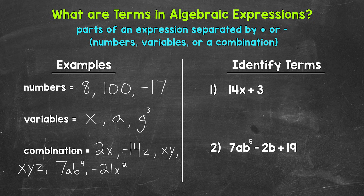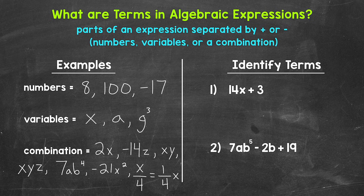My last example is x over 4, so x divided by 4. Keep in mind, this can be rewritten using multiplication — x over 4 is equivalent to one-fourth x, or one-fourth times x. I also want to mention that a number in front of a variable or multiple variables is called a coefficient. For example, for 2x, 2 is the coefficient. For negative 14z, negative 14 is the coefficient.